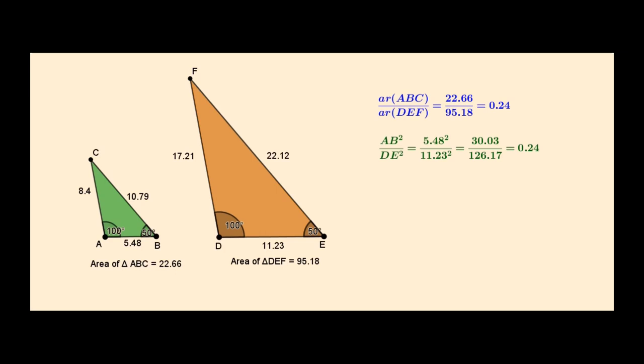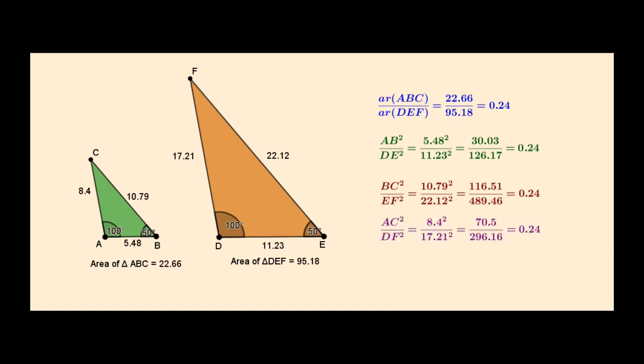In all the cases, RHS is the same. BC squared by EF squared is also 0.24, and AC squared by DF squared is also equal to 0.24. Equating LHS, we get: area of triangle ABC over area of triangle DEF is equal to AB squared over DE squared, or BC squared over EF squared, or AC squared by DF squared.